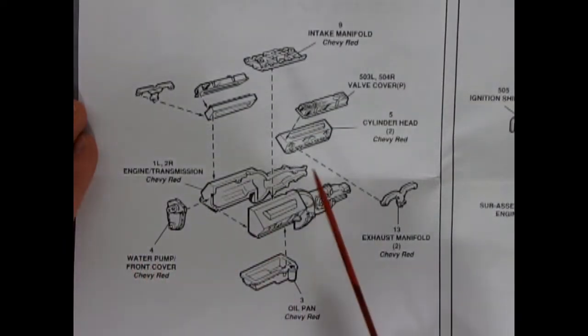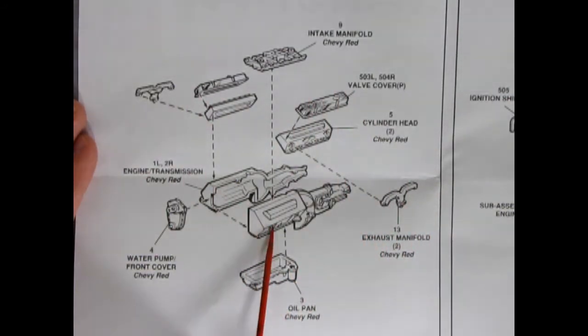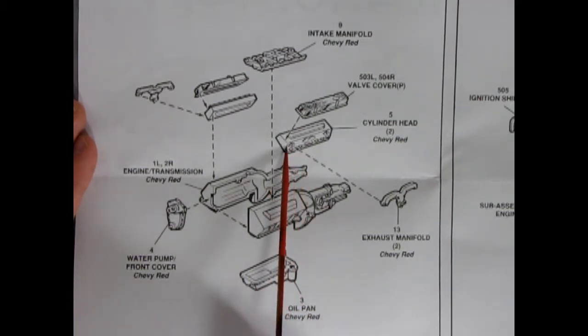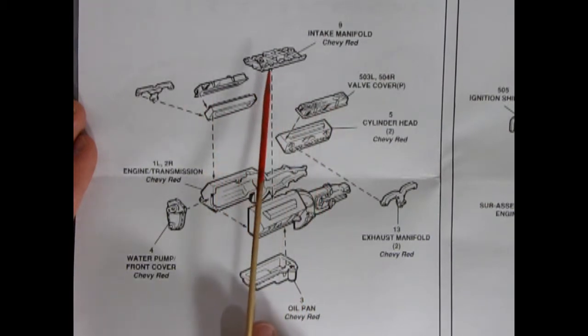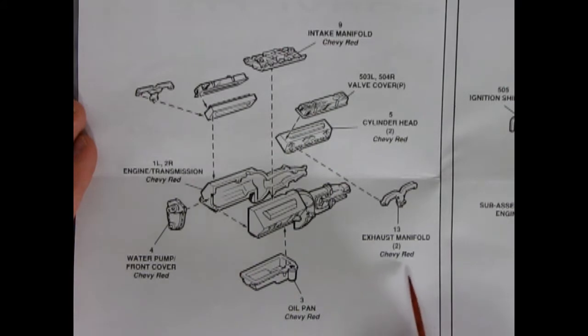In step number one we get this nice 11 piece engine block assembly. You can see we've got our left and right hand sides of our engine with the transmission molded in place. Then our cylinder heads and these nice chrome valve covers for both left and right. The Chevy intake manifold and it does have the paint call outs. So Chevy red. There's our exhaust manifolds which are also Chevy red. And the oil pan and our front water pump cover going on here. So this is a good assembly step.